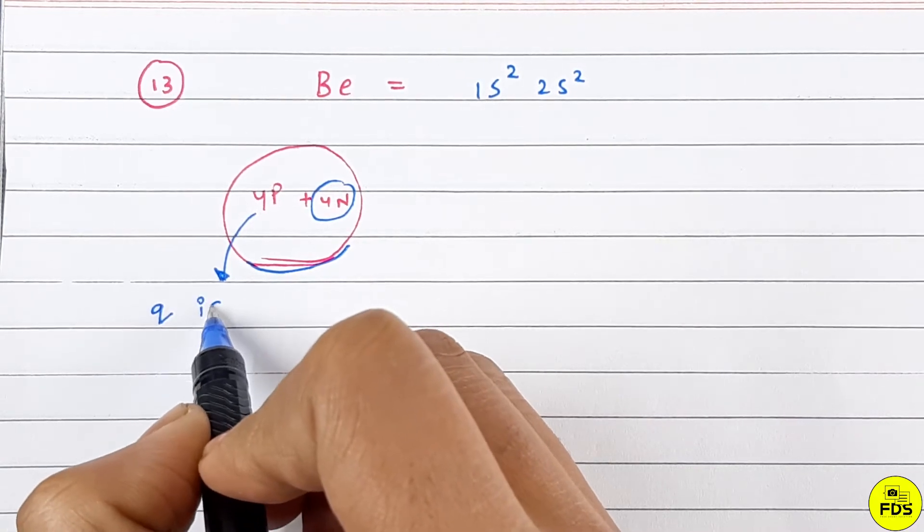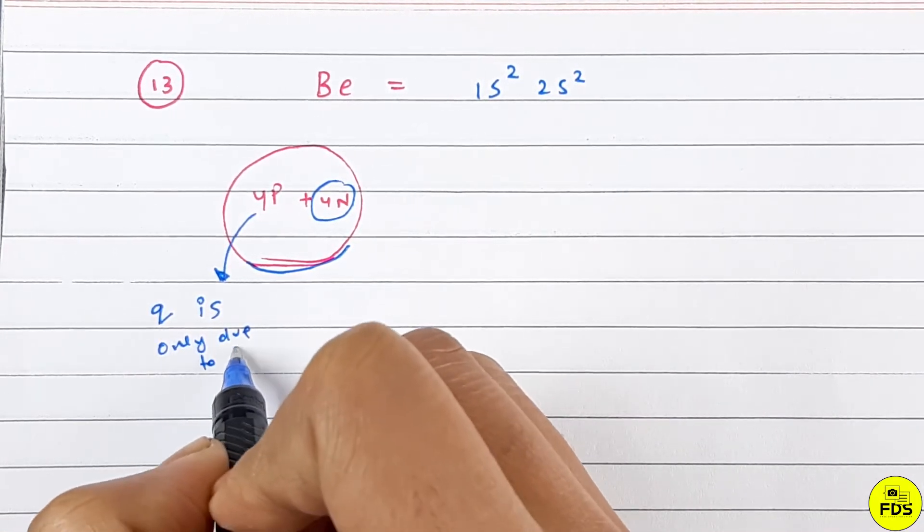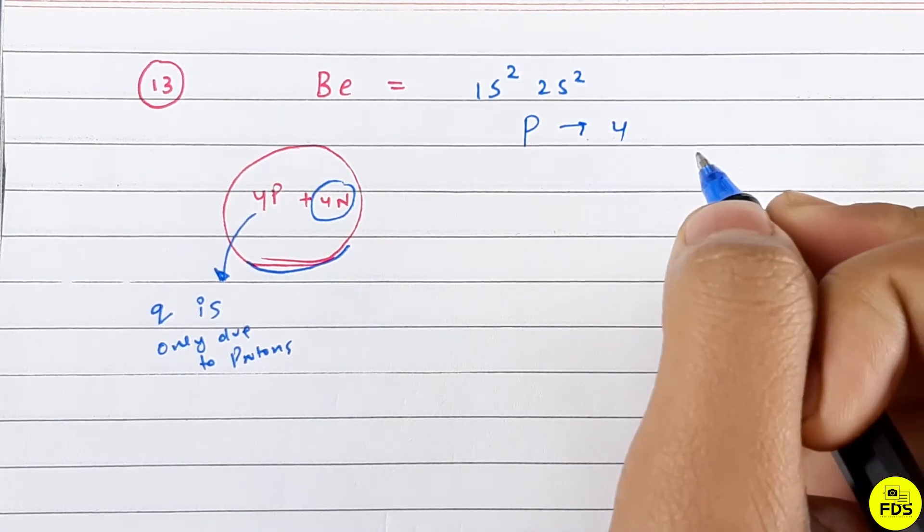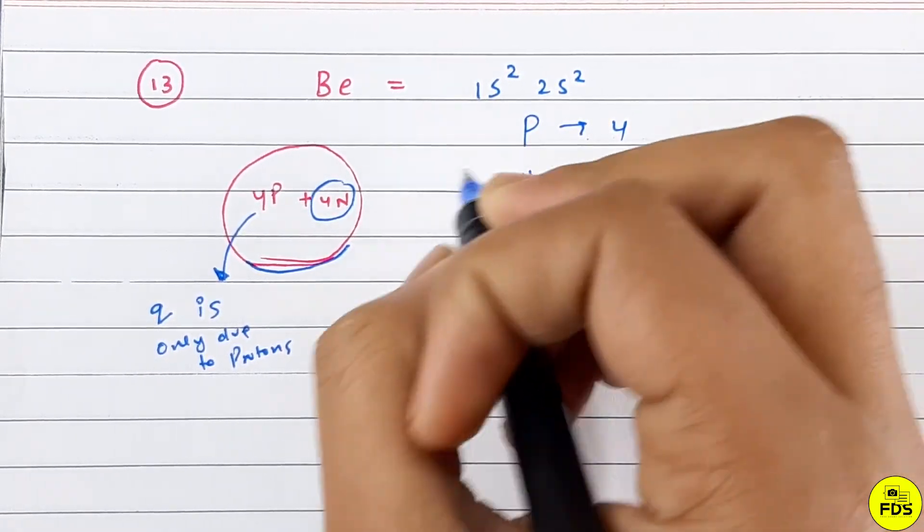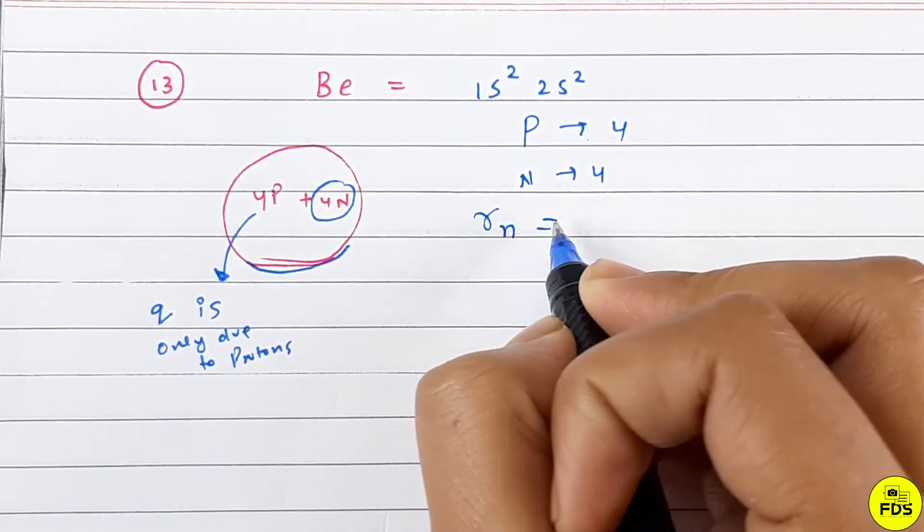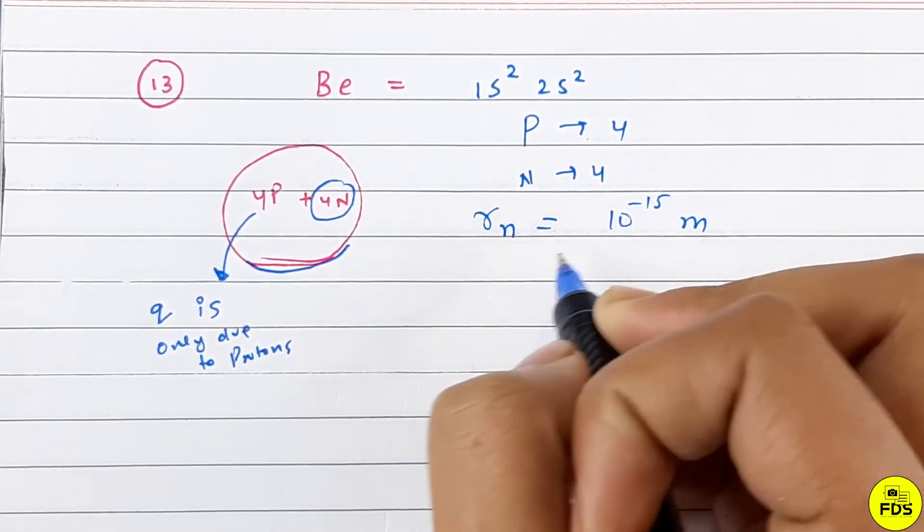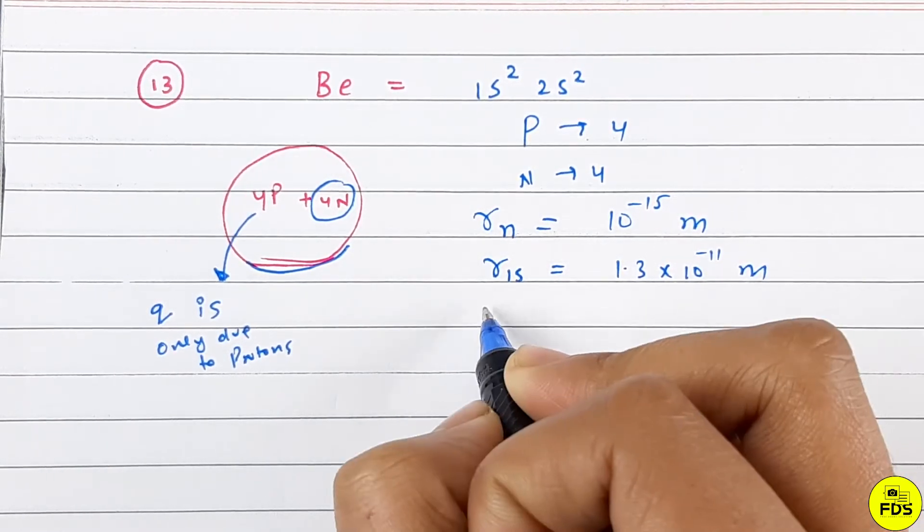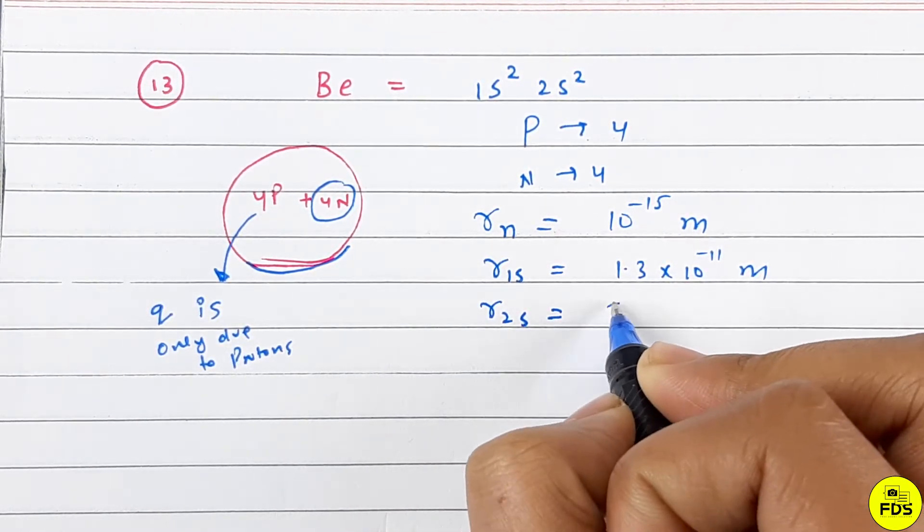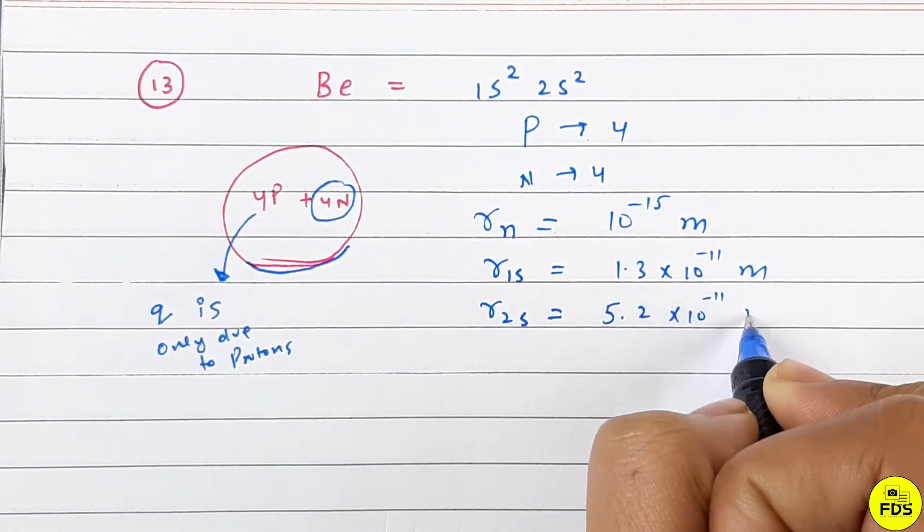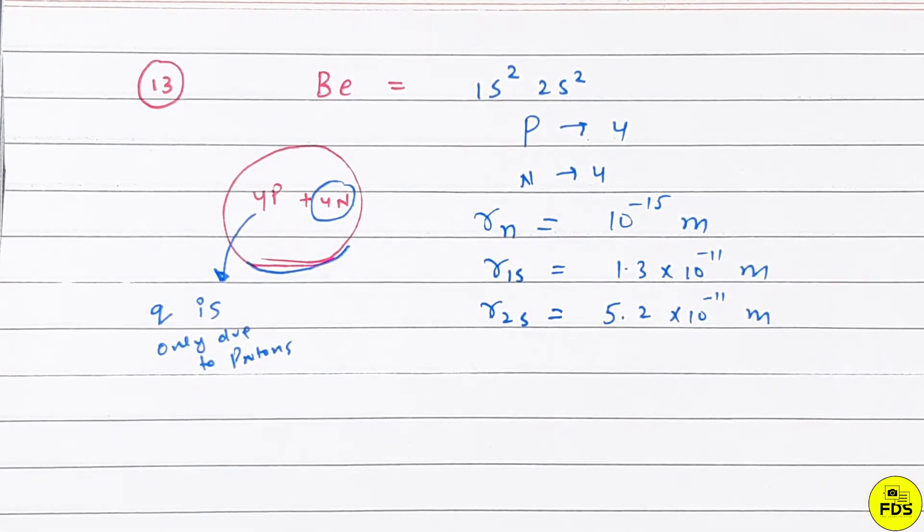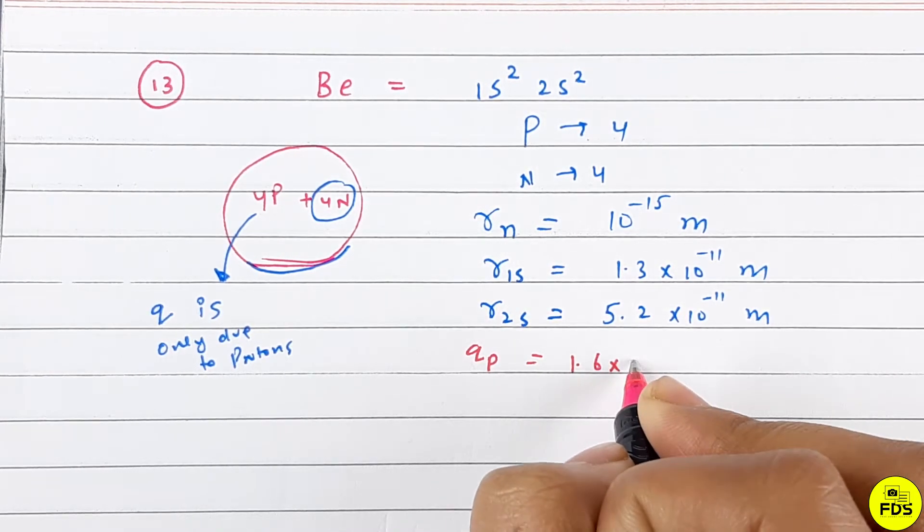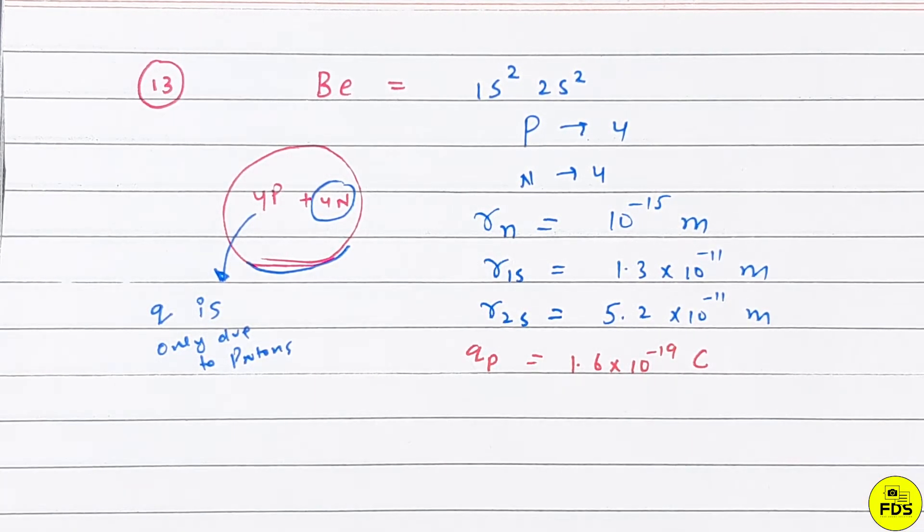The charge is only due to protons. So we have 4 protons and 4 neutrons, nucleus radius 10^-15 m, 1s cloud radius r₁s = 1.3 × 10^-11 m, and 2s cloud radius r₂s = 5.2 × 10^-11 m. We know the charge on one proton is 1.6 × 10^-19 coulombs.